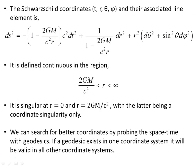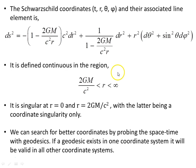The Schwarzschild coordinates t, r, theta, and phi and their associated line element is defined and continuous in the region between r just outside the Schwarzschild radius and up to infinity, but not at the Schwarzschild radius. It's also discontinuous at r equals 0, and at the Schwarzschild radius itself, this becomes singular. So it's singular at r equals 0 and at the Schwarzschild radius, with the latter being a coordinate singularity only and not a physical one.